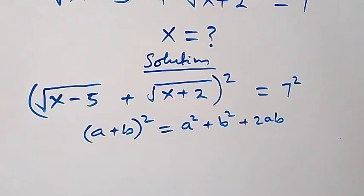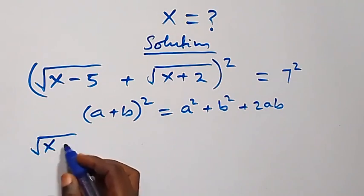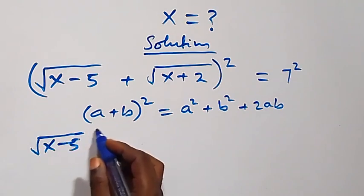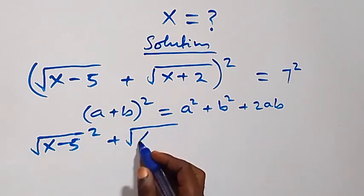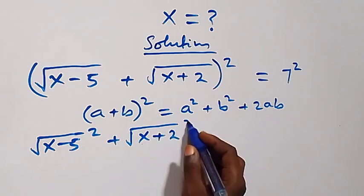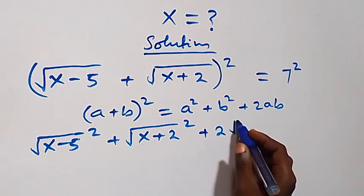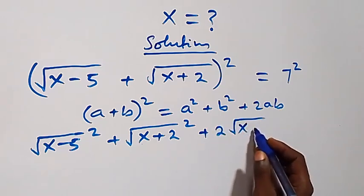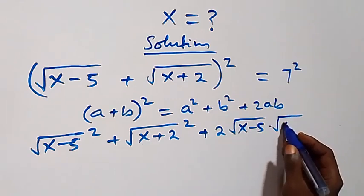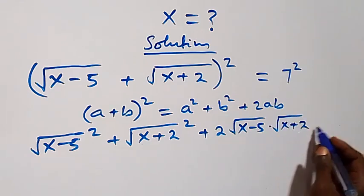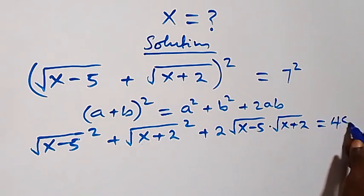What we have here becomes: root(x minus 5) squared, plus root(x plus 2) squared, then plus 2 times root(x minus 5) times root(x plus 2), which is equal to 7 squared, that is 49.